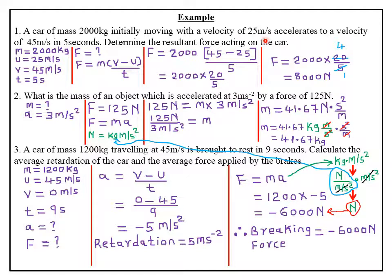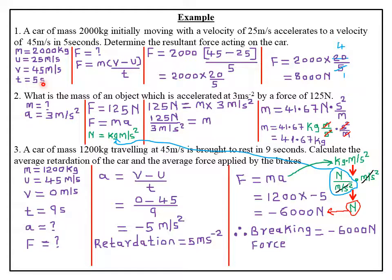As usual, the first thing is to highlight the key information provided by the question. We are told a car of mass 2,000 kg, so mass m is 2,000 kg. Initially moving with a velocity of 25 — so that is the initial velocity, denoted by small u. So u is 25 meters per second. Then it accelerates to a final velocity of 45 meters per second, denoted by small v. So v is 45 meters per second. In 5 seconds — those are the SI units for time — so t is 5 seconds.